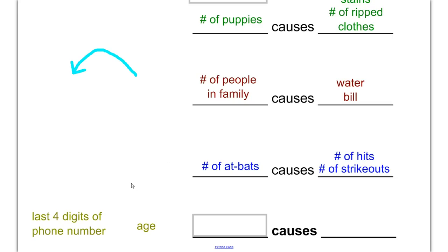And this last one, the last four digits of your phone number and your age. The reason that neither one of these causes the other is because these two things are not even correlated. You first have to be correlated. You have to form some sort of pattern, some sort of relationship between these values, before you can start figuring out which one causes which. If there is no relationship whatsoever, then there is definitely no cause. One of these is definitely not causing the other. And that would be correlation and causation.